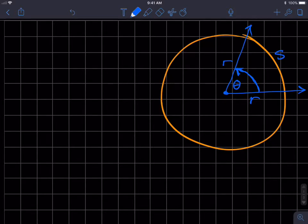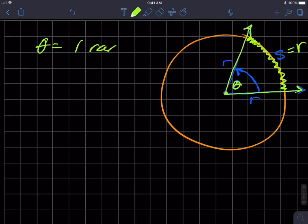...the length of this arc in green, the length of this arc. So if I stretched it out and laid it down on top of the ruler, its length would be equal to the radius of the circle. When that happens, this angle has a measure of one radian. So theta equals one radian when its subtended arc is equal to one radius. So that's the definition of a radian.